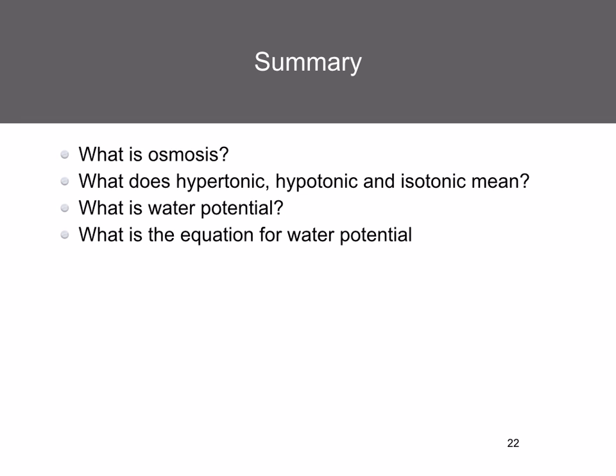In summary: osmosis is the net movement of water molecules from a hypotonic solution (high water potential) to a hypertonic solution (low water potential) across a partially permeable membrane. Hypertonic means high concentration of solute; hypotonic means low concentration of solute; isotonic means equal concentrations. Water potential is the free kinetic energy of water molecules — pure water is zero kilopascals, and the more solute, the more negative the value. Water potential equals solute potential plus pressure potential, where solute potential is always negative.